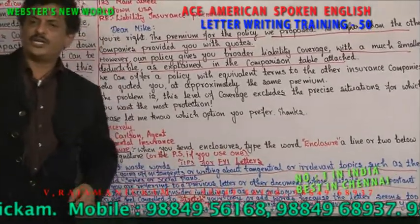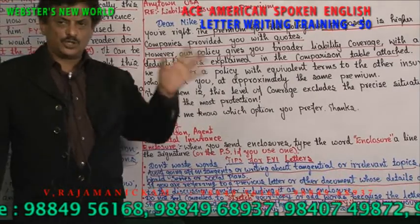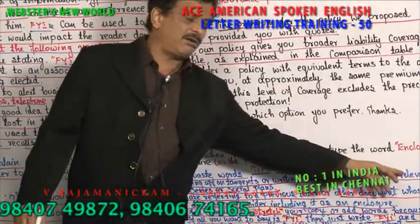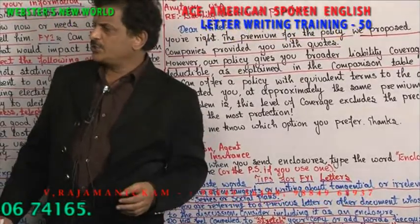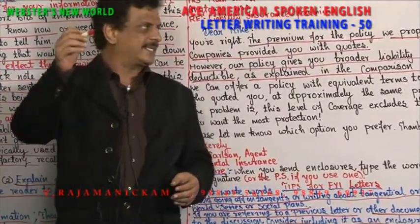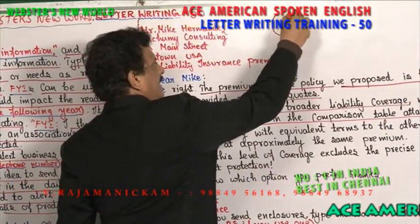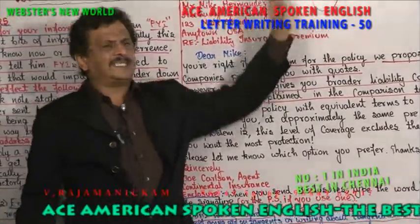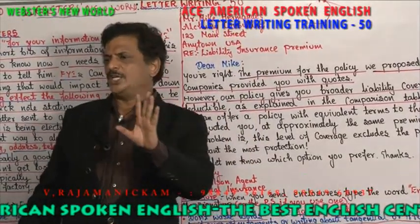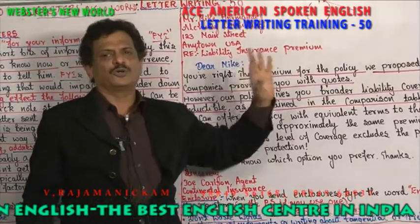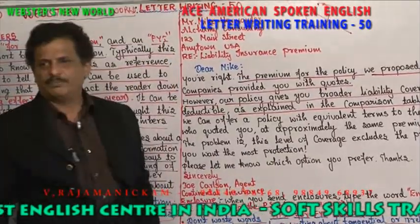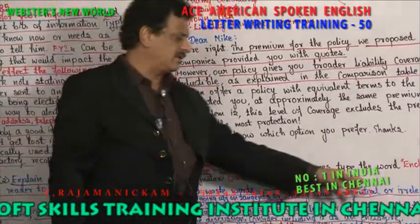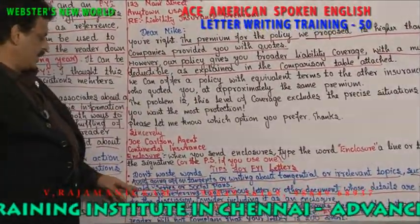What are the tips for a for your information letter? Number one: don't waste words. Don't unnecessarily write words. Avoid going off on tangents or writing about tangential or irrelevant topics. Tangent — you are a math student, you know what a tangent is: a circle with a line touching at one common point. Don't be tangential means don't just touch it and go — you have to go inside, deeply talk about the topic, not just cover it superficially. Avoid tangential or irrelevant topics such as the world series or social plans.